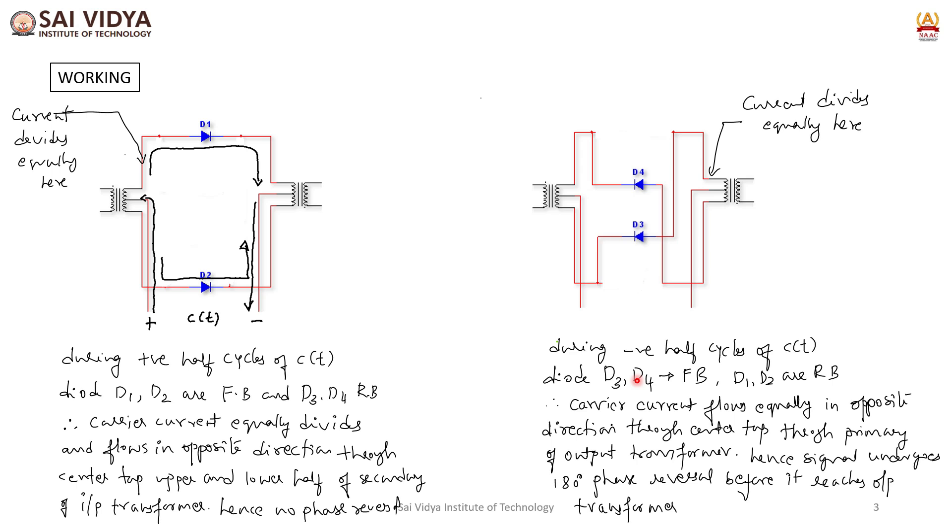During negative half cycle of the carrier, diode D3 and D4 are forward biased. The current flowing through the primary of the output transformer is in opposite direction, and it goes through 180 degree phase shift before it reaches the output of transformer.